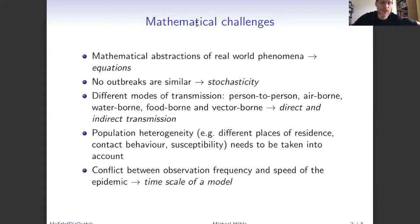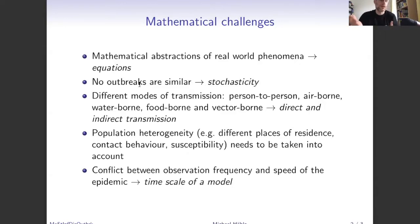Our job as mathematicians is to abstract and try to capture the important parts in order to answer a question. There will always be a trade-off: is the model too simple for the problem, or should something be added? We should always be aware that the models we use are abstractions of reality which might not be correct for what is actually going on. No outbreaks are going to be similar, so stochasticity is important — and this is also where the statistical dimension comes in: how can we actually use observations to fit data.